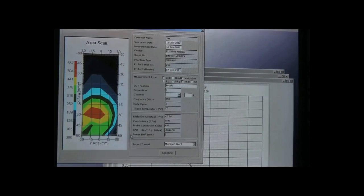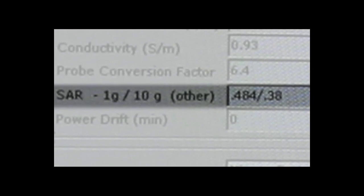Now let's look at the SAR reading. It's dropped to .484 watts per kilogram of cell phone radiation absorbed at 1 gram density of brain matter.